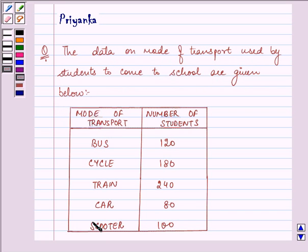Now these are the mode of transport: bus, cycle, train, car, scooter. The number of students who are coming by bus are 120, by cycle 180, by train 240, by car 80, by scooter 100.